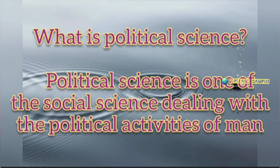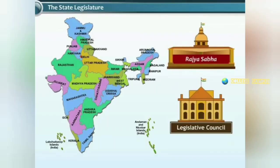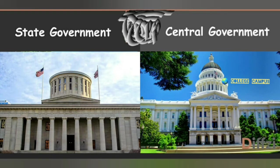Before starting this concept, we must know what political science is. Political science is one of the social sciences dealing with the political activities of men. It deals with the state and government, and studies the origin and nature of state and forms of political institutions. The study of state is the main subject matter of political science.